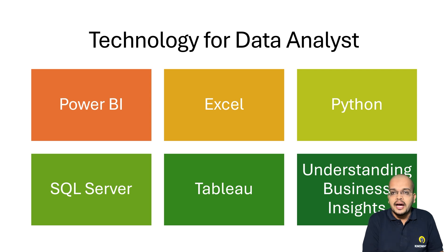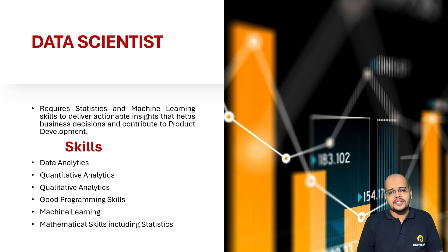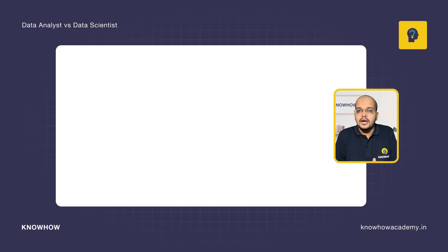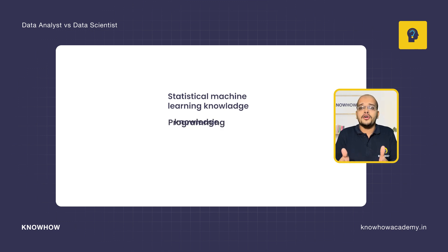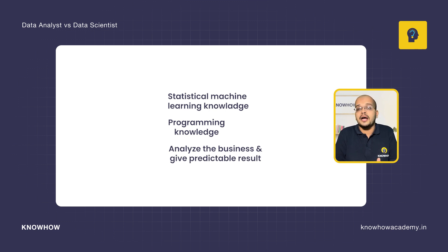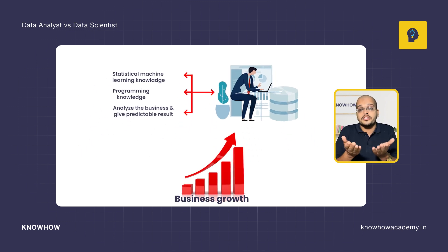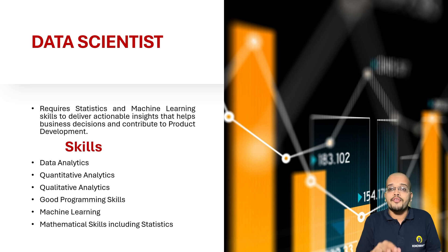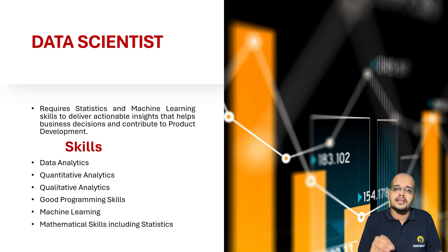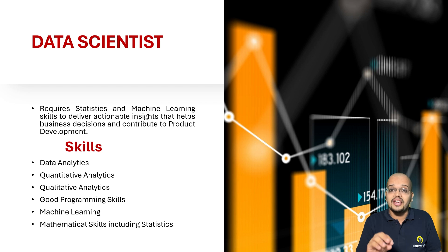Now let's look at the clear difference between a data analyst and a data scientist. A data scientist is someone with strong statistical and machine learning knowledge, good programming skills, and the ability to analyze business data and deliver predictive results. Many people are afraid to become a data scientist, thinking they need to know Java, C, C++, JavaScript, HTML, CSS, PHP, React.js, AWS, Azure, Power BI, Tableau, SQL, MySQL, Oracle, and more — but that is a wrong mindset. You can become a data scientist with just four or five skills.